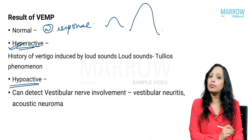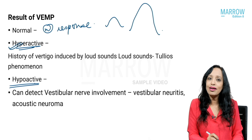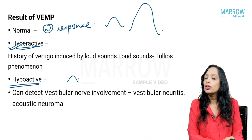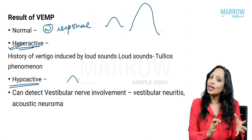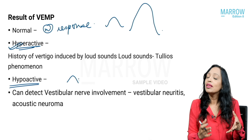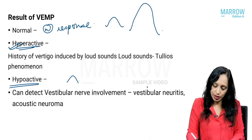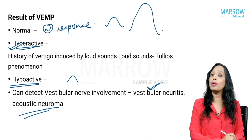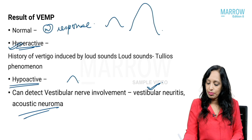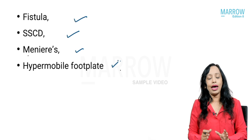It is also possible that the VEMP response will be hypoactive — the amplitude is less, or giving a loud sound still does not elicit a normal response. A hypoactive response indicates that the inferior vestibular nerve (when testing cervical VEMP) is not functioning properly. This can indicate vestibular neuritis or an acoustic neuroma arising from the inferior vestibular nerve.